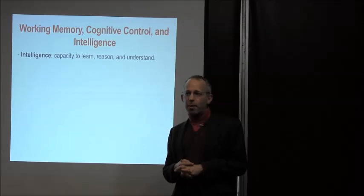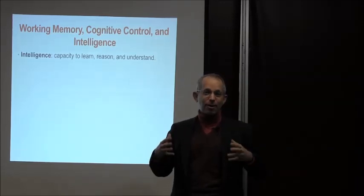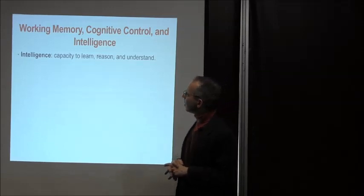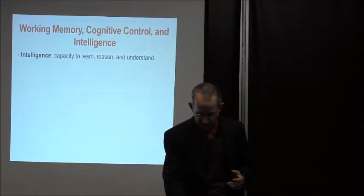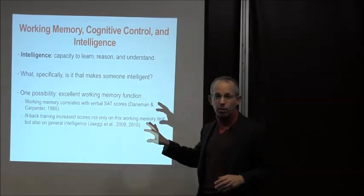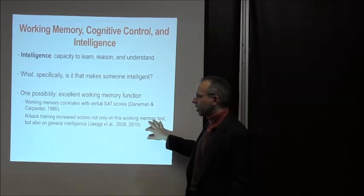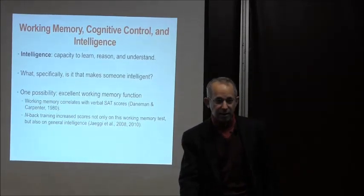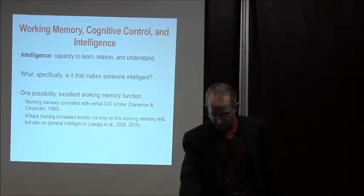Working memory function has long been correlated with intelligence. Intelligence is the capacity to learn, reason, and understand — and a big predictor is how much you can keep in your head at one time. Working memory correlates with verbal SAT scores. Importantly, N-back training — as people get better and better at the N-back task — actually improves scores on general intelligence tests. This suggests that scores on general intelligence aren't necessarily innate and fixed; you can actually train some of these skills through working memory practice.